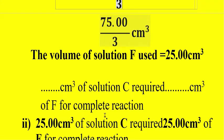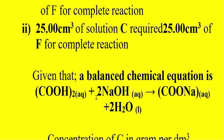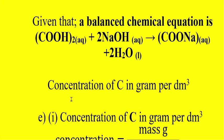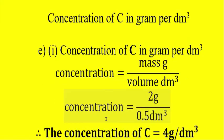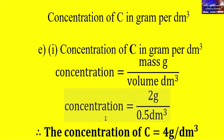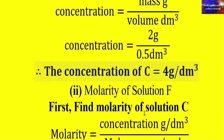So 25 milliliters of solution C required 25 milliliters of solution F for a complete reaction — that is the titration result. Given the balanced chemical equation: the concentration of solution C is calculated as mass divided by volume. Using our data: 2 grams divided by 0.5 decimeter cubed gives a concentration of solution C equal to 4 grams per decimeter cubed.